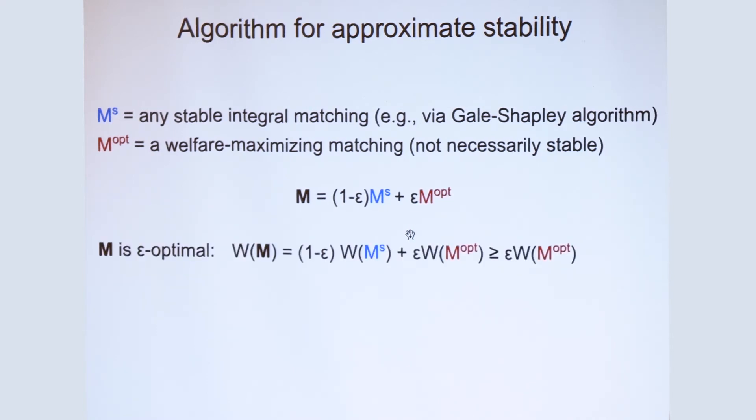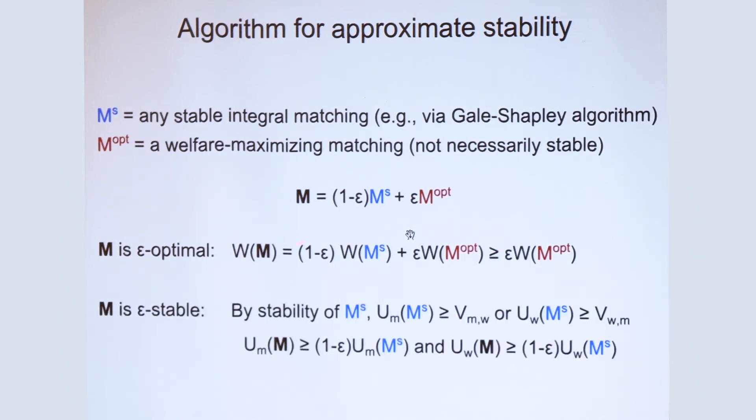Why is this matching epsilon approximation? Well, because the utilities are linear, and so is the welfare, and it puts an epsilon mass on the optimal matching. So that's why we get the welfare approximation. And for the stability approximation, we get it from this term here.